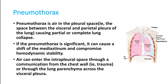Air can enter the pleural space through a communication from the chest wall, such as after chest trauma or penetrating trauma of the lung, or from the lung parenchyma itself. Either a penetrating lung trauma or a tract from the lung parenchyma to the pleura can produce pneumothorax.